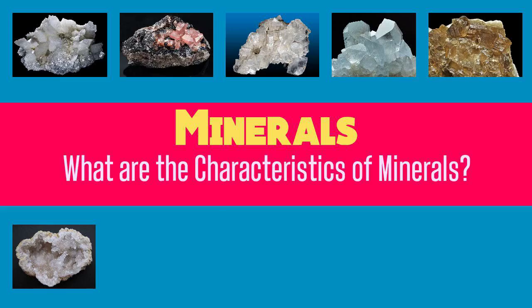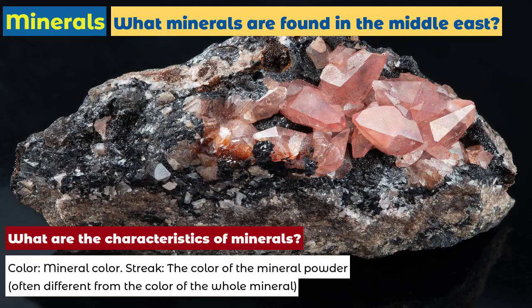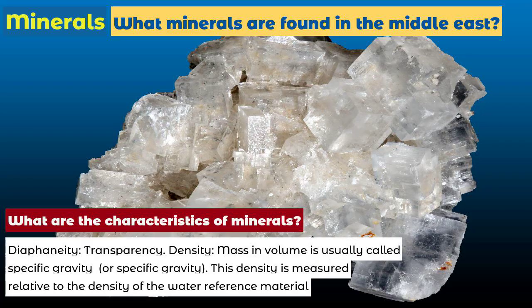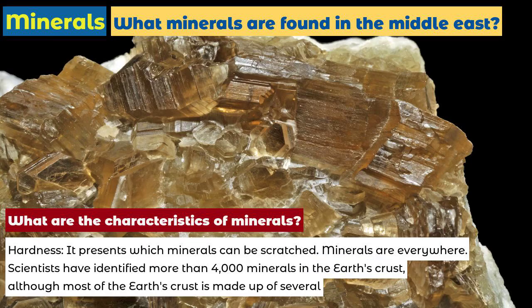What are the characteristics of minerals? Some minerals can be detected by features visible to the naked eye, by examining their physical properties. These features include: Color, the mineral's color. Streak, the color of the mineral powder, often different from the color of the whole mineral. Diaphaneity, transparency. Density, mass and volume, usually called specific gravity, measured relative to the density of water. Foliation, the mineral's tendency to crack along weak surfaces. Fracture, the pattern by which a mineral is broken. Hardness, which indicates which minerals can be scratched.